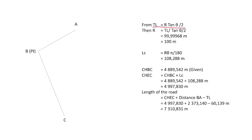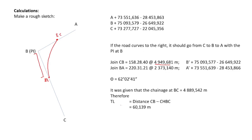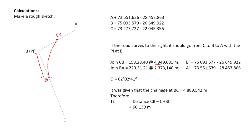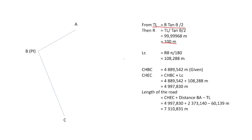The formula for tangent length is: TL = R × tan(deflection angle / 2). Rearranging to solve for radius, and substituting TL = 60 and deflection angle = 62 degrees, we get a radius of 100 meters. So the curve has a radius of 100 meters.